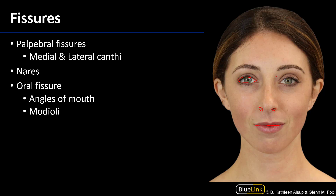If we start with the palpebral fissures, the palpebrae are actually the eyelids, so there's a superior and an inferior palpebra, and then for each eye there is a medial and lateral canthus.